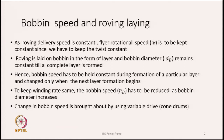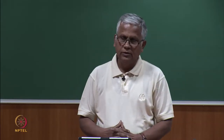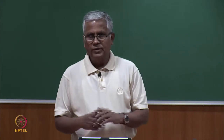However, as the bobbin diameter increases — as we lay one layer, then the second layer, third layer — the diameter keeps on increasing. And therefore we need to reduce the bobbin speed in order to keep the winding speed the same always, because the delivery is fixed and whatever is being delivered, the same amount of roving we have to always wind. So the winding rate is the same, but the winding speed is different because the bobbin is growing in diameter.